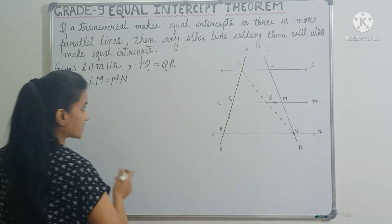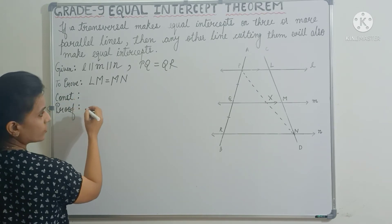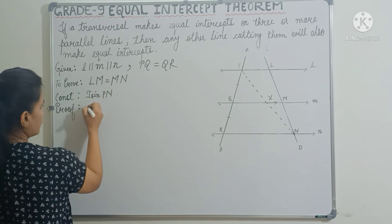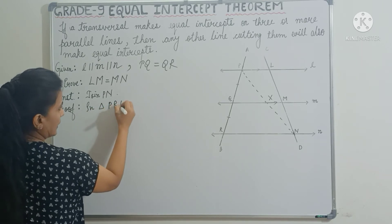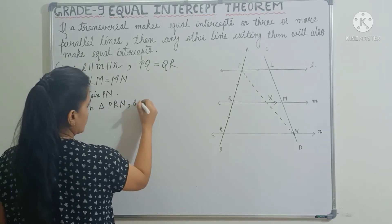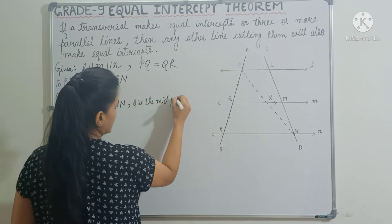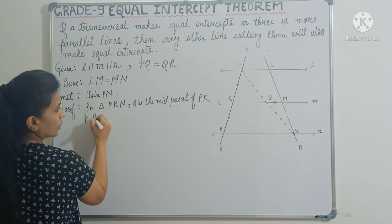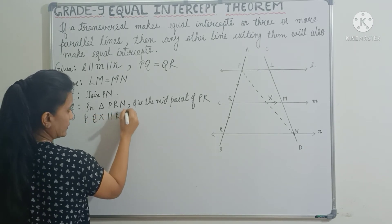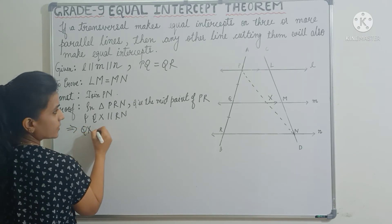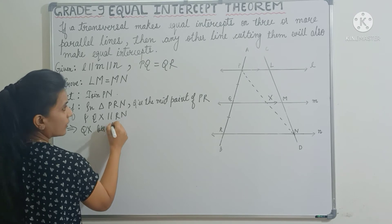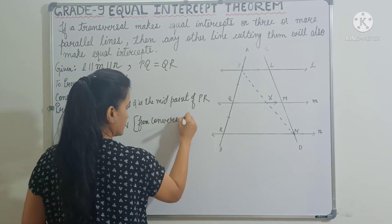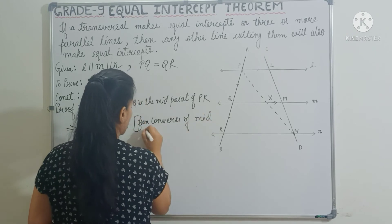Let's write down everything we discussed. Construction: join PN. Now in the proof, take triangle PRN. In this triangle, Q is the midpoint of PR and QX is parallel to RN. This implies QX bisects PN — from the converse of the midpoint theorem.